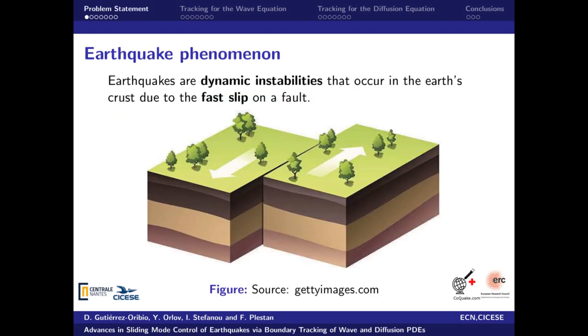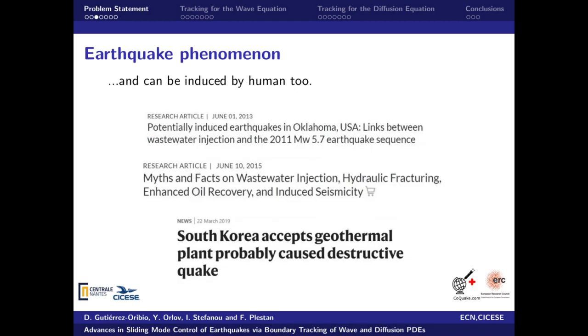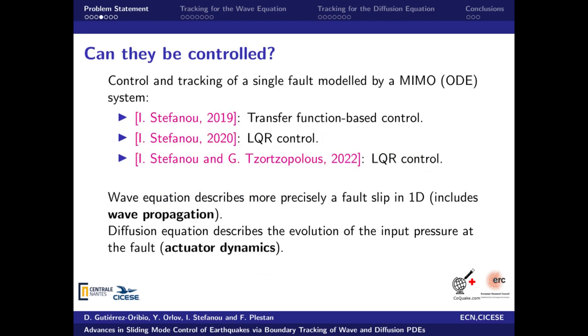Earthquakes are dynamic instabilities that occur in the Earth's crust due to the fast slip of a fault, causing the abrupt release of stored energy. Earthquakes are natural disasters caused by the movement of tectonic plates and have caused many tragedies throughout human history due to their destructive behavior. Nowadays, it is generally accepted that humans can also induce or trigger earthquakes. Examples exist in oil and gas production, geothermal energy, and CO2 sequestration. All this makes earthquake prevention an important research topic to prevent future disasters. The question is, can they be controlled?